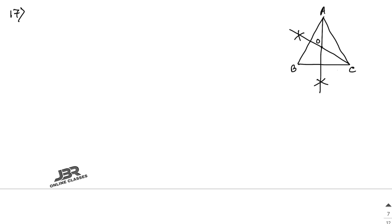In sum number 17: in an equilateral triangle, prove that the centroid and the circumcenter of the triangle coincide. In an equilateral triangle, each and every side is equal — so triangle ABC has AB equal to BC equal to AC. We need to prove that the centroid and circumcenter coincide.